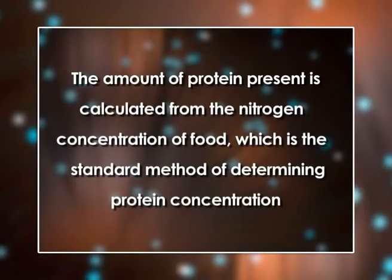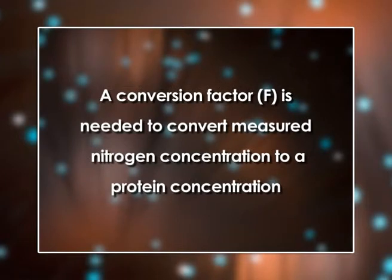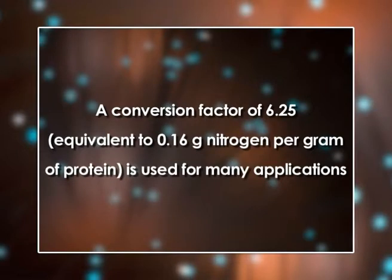The amount of protein present is then calculated from the nitrogen concentration of the food. It is usually considered the standard method of determining protein concentration. Because the Kjeldahl method does not measure protein content directly, a conversion factor F is needed. A conversion factor of 6.25, equivalent to 0.16 grams nitrogen per gram of protein, is used for many applications. However, this is only an average value and each protein has a different conversion factor depending on its amino acid composition.